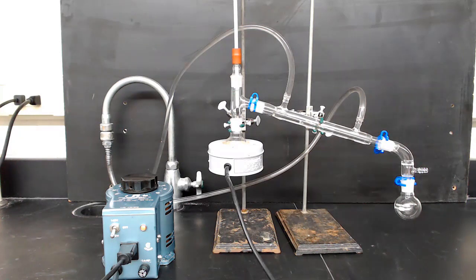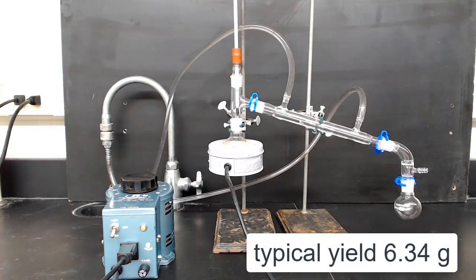Finally, determine the mass of your product and record that value in your notebook. The typical yield for this experiment is 6.34 grams.